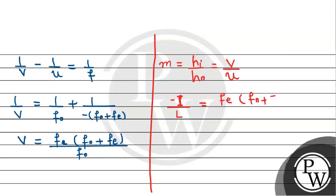V which we found: F_E(F_O + F_E)/F_O, divided by minus (F_O + F_E). The (F_O + F_E) terms cancel, giving us F_O/F_E equals L/I, where the negative signs cancel out.